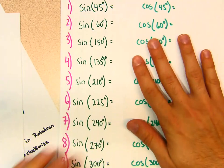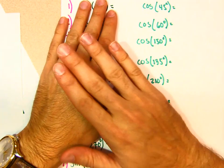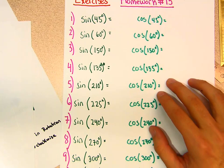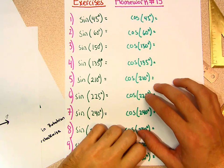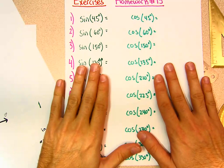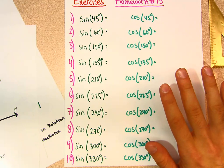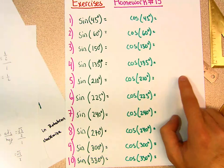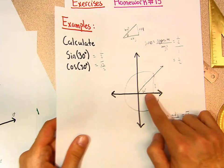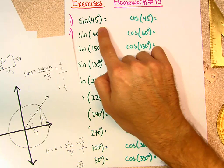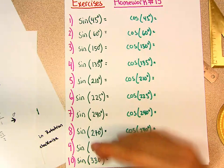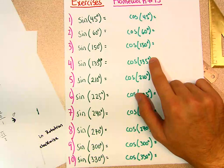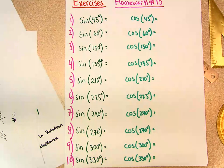Now I want you to calculate all of these angles on your own. You have to get good at going around the circle and calculating every single one of these angles before we can move on to the lesson. This is all Algebra 2 material we covered last year — enjoy!